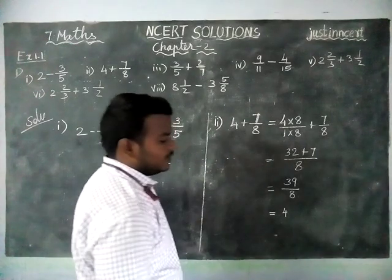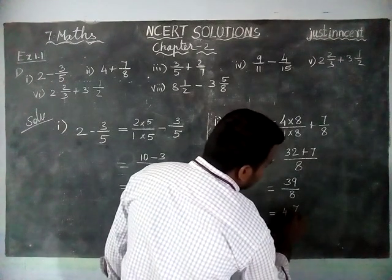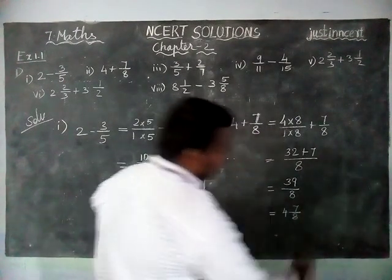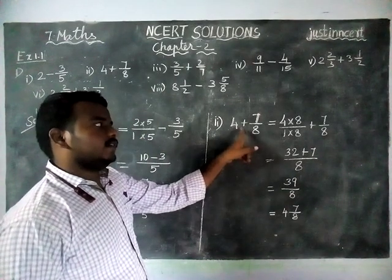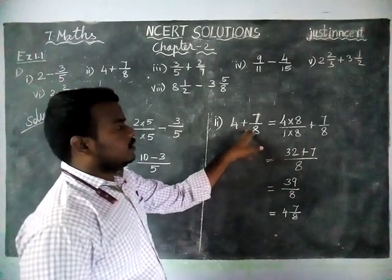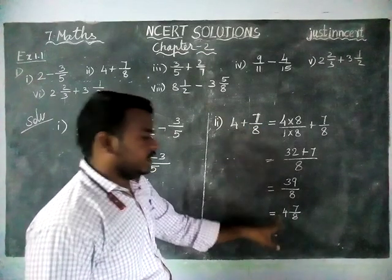8 fours are 32, remaining 7 is there. So remainder is written in the numerator and divisor written in the denominator. 4 and 7 by 8. Same we can write it in the first step alone. If it is addition alone we can write it like this.